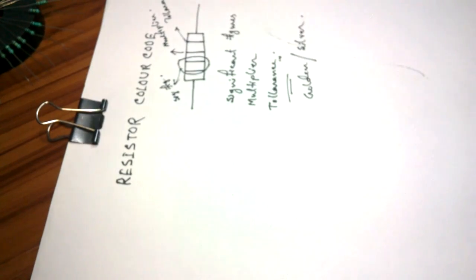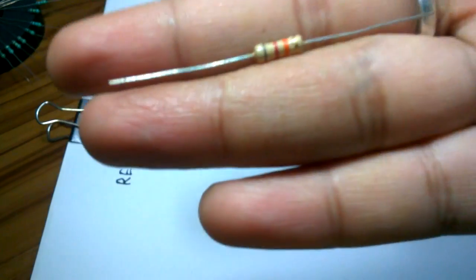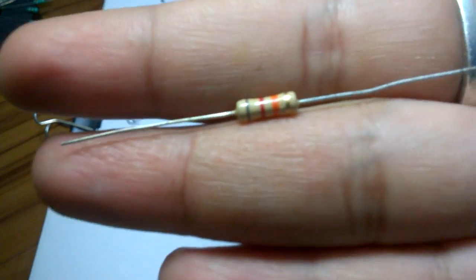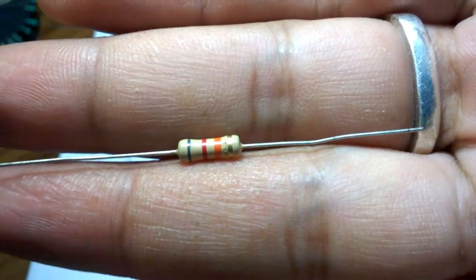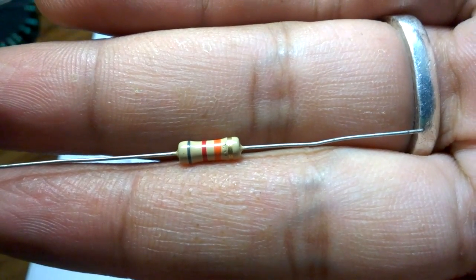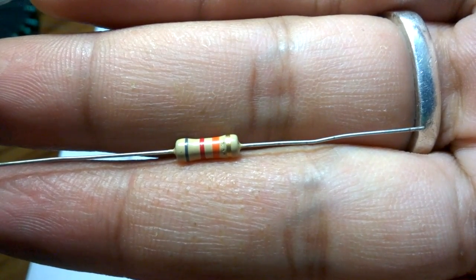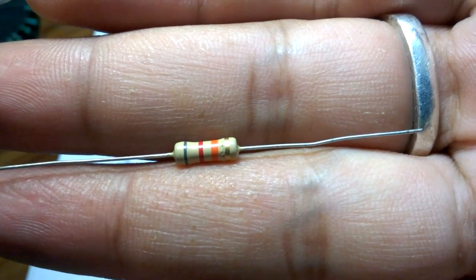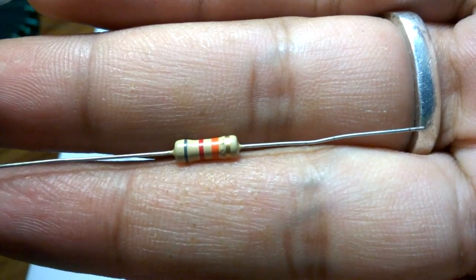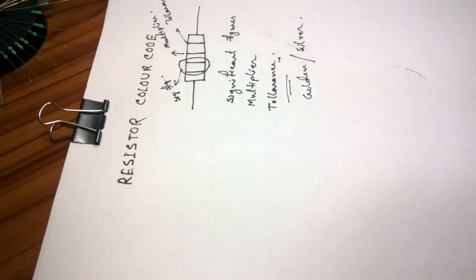Okay. As you can see, each band has a particular color. And each of the color has a particular value. Now, we will know the values of the color.